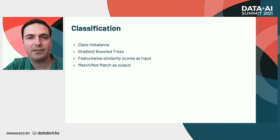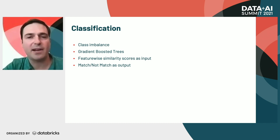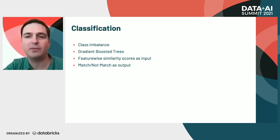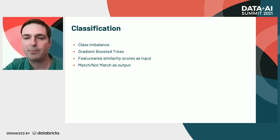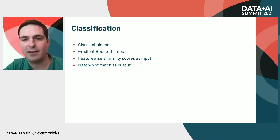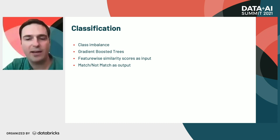For classification, the first thing to know about the data is that even after blocking, this is an imbalanced data set, where most of the records are not matches. When building the training data set, the simple way to deal with this is to oversample for matching records. For our classification model, we've been working with gradient-boosted trees. This is a point in our project where we've been working exclusively in development, so all of our methods have been with synthetic data. We're currently at a stage of building our training data set for our production environment.